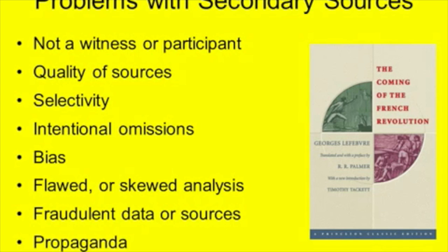Just like primary sources, the authors of secondary sources can have their own methodological biases or their own political biases as well. Very occasionally scholars will look at a set of documents and come up with inaccurate or flawed analyses. You can't always assume that a secondary source, even a peer-reviewed book by a scholar, is necessarily good analysis. At times historians have written books based on either inadvertent or deliberate fraudulent data. And finally, some historians and scholars use their positions as authoritative figures to push propaganda for governments, corporations, or their own agendas.